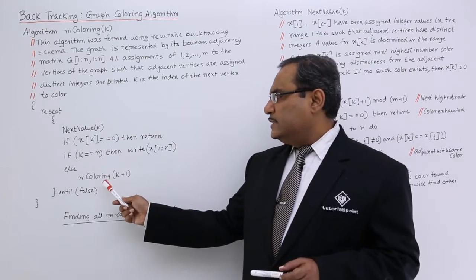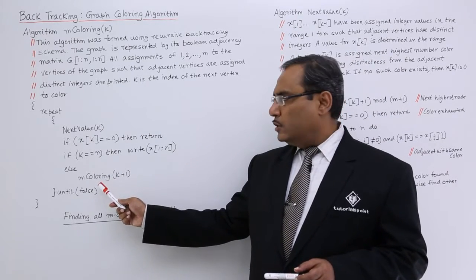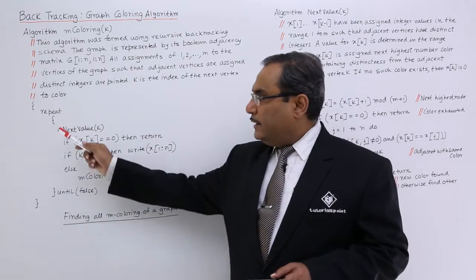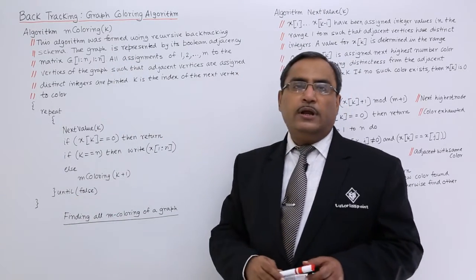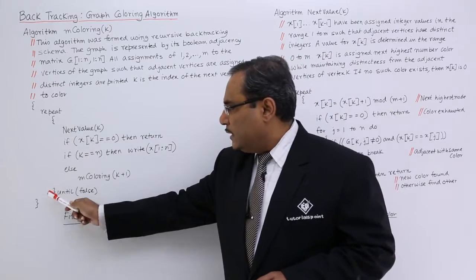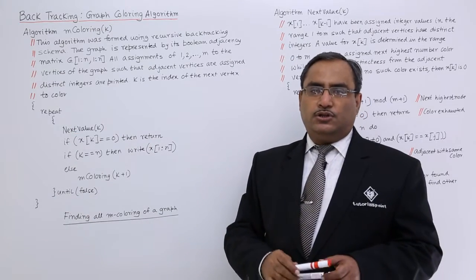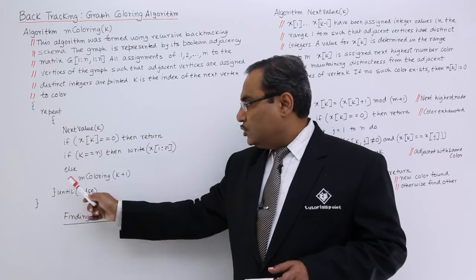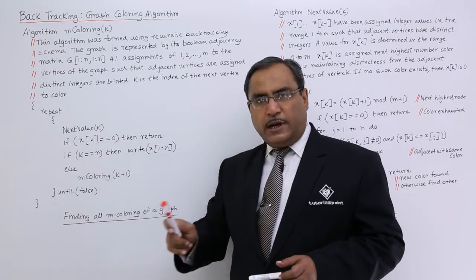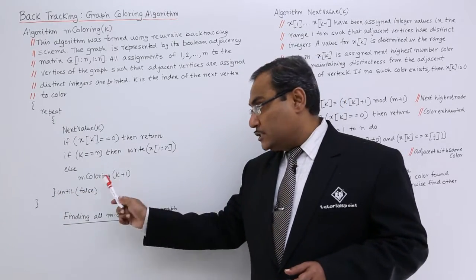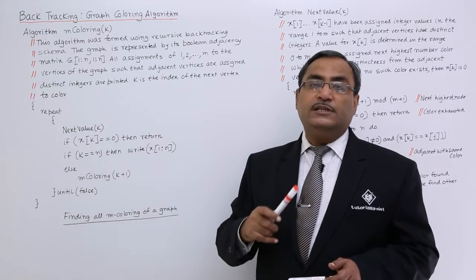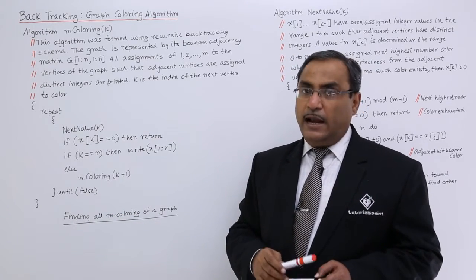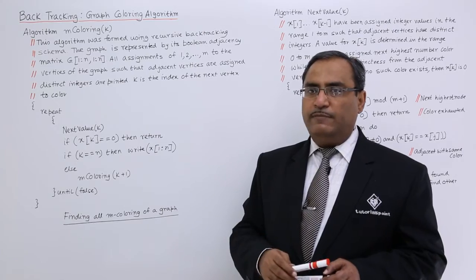This is a recursive function because m-coloring is called from within m-coloring. It uses recursion within iteration — repeat-until means iteration — and this combination means it is going to give you all possible solutions for a given graph and a given value of m.